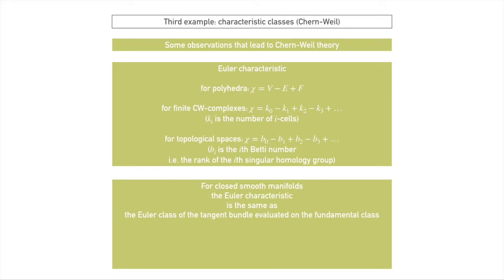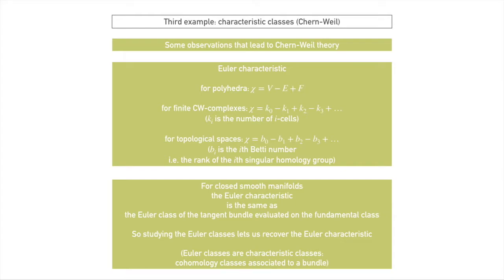So what are Euler classes? They are characteristic classes, which are cohomology classes that we associate to a bundle. There are lots of different types of characteristic classes, but in general they are just classes in cohomology that tell you something about your bundle. The fact that the Euler characteristic is the same as the Euler class of the tangent bundle evaluated on the fundamental class is a consequence of what's known as the Chern theorem, or the Gauss-Bonnet-Chern theorem, or the generalized Gauss-Bonnet theorem.